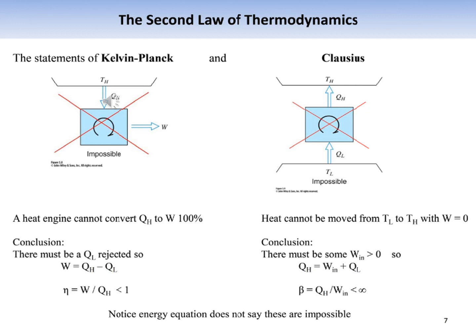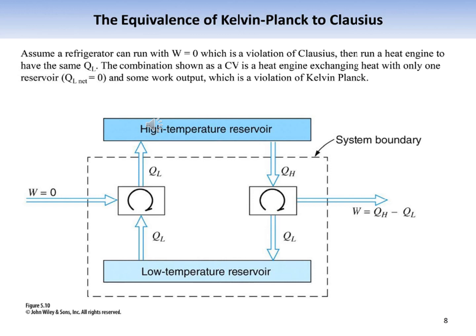The Clausius statement: it is impossible to construct a device that operates in a cycle and produces no effect other than the transfer of heat from a cooler body to a warmer body. In effect, it is impossible to construct a refrigerator that operates without an input of work, implying that the COP is always less than infinity. Both statements are negative statements — impossible to prove directly — but the second law rests on experimental evidence. Every relevant experiment verifies the second law, and none contradicts it. These two statements are equivalent: a violation of either implies a violation of the other.